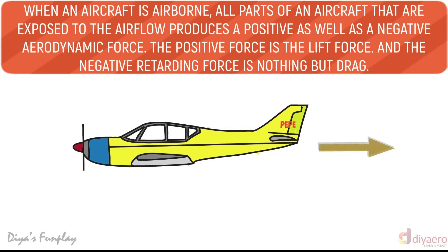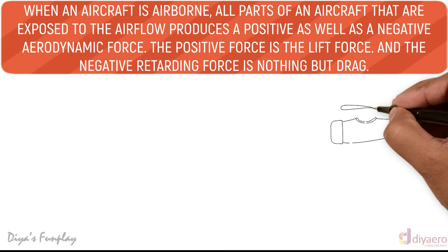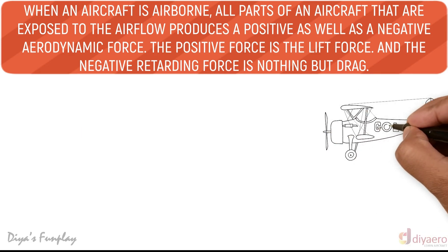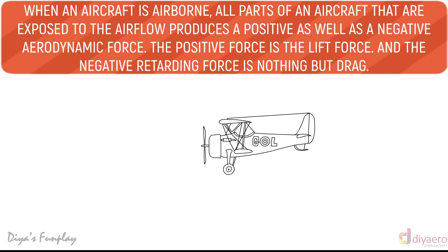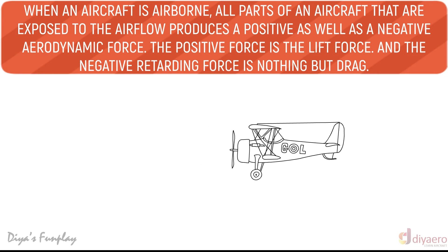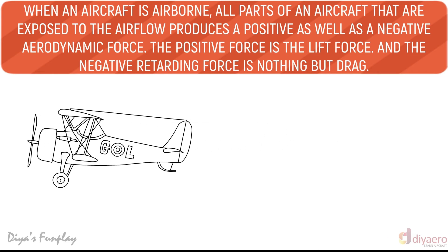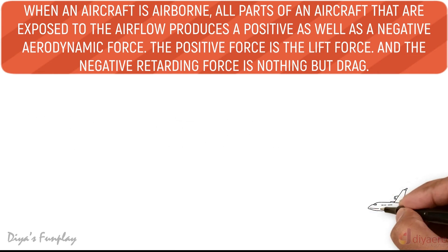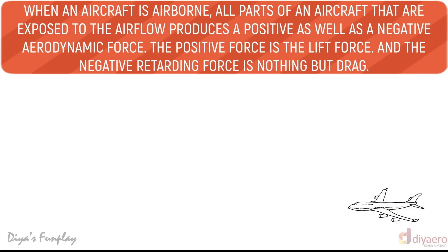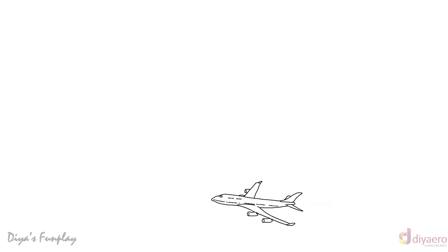When an aircraft is airborne, all parts exposed to the airflow produce a positive as well as a negative aerodynamic force. The positive force is the lift force, and the negative retarding force is drag. Drag acts in the opposite direction to the motion of the aircraft and is the biggest enemy of high-speed flight. Streamlining of shapes, polishing surfaces, and flush riveting are among the many design considerations used to reduce drag force.